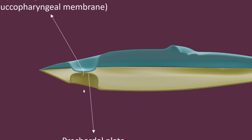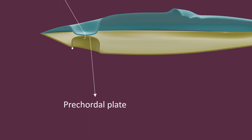So what is precordial plate? It is the hypoblastic part of the oropharyngeal membrane — it is the part of the hypoblast that makes up the oropharyngeal membrane. You can also say it is the primitive endodermal part of the oropharyngeal membrane, because the hypoblast is also called the primitive endoderm.